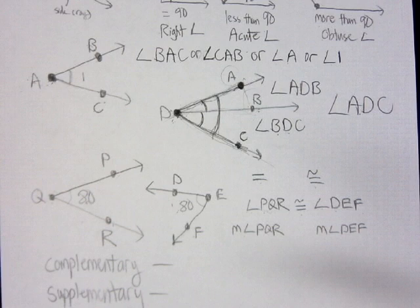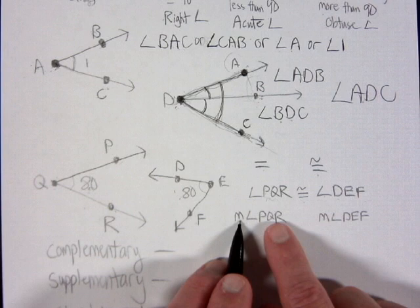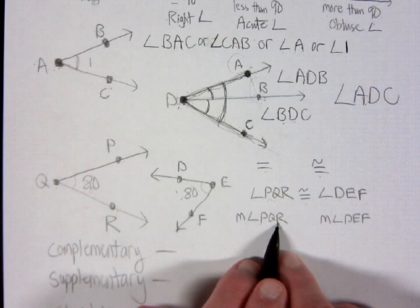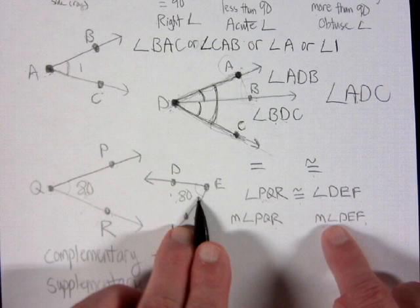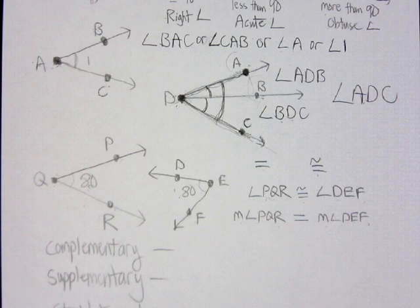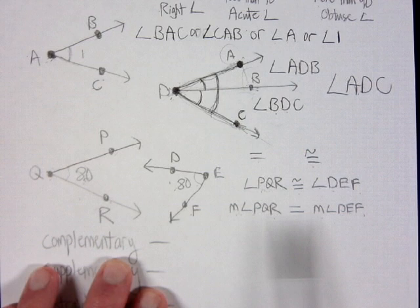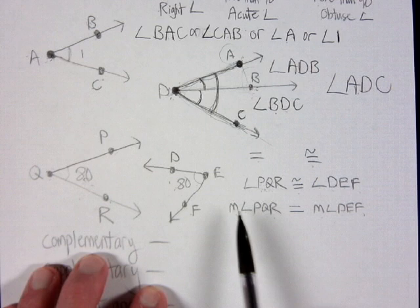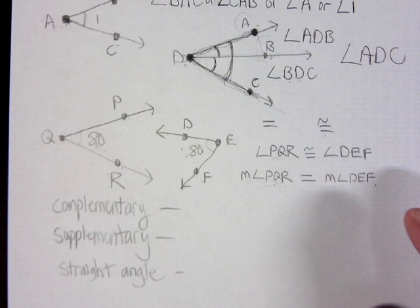If I want to talk about the degree measure of the angles, I put a lowercase m outside the angle symbol. This is read 'measure of angle PQR.' Measures are numbers, so I use equal: measure of angle PQR equals measure of angle DEF equals 80. The angle itself is an object (congruent); the measure is a number (equal).